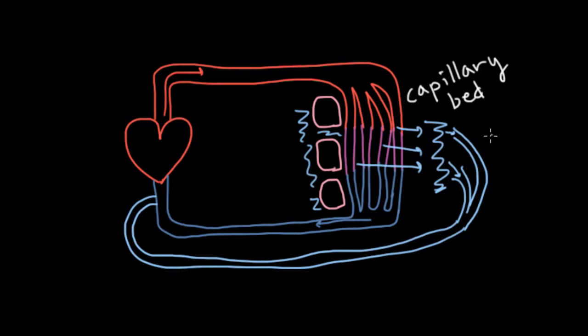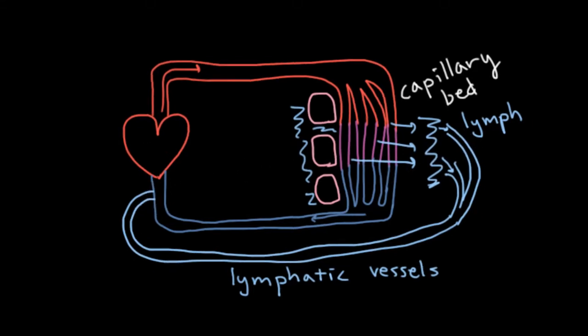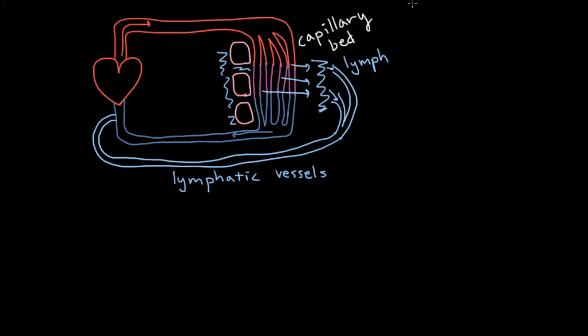So these vessels here we call lymphatic vessels. And if you'll notice, they're a little bit different from blood vessels because they don't form a closed loop. The lymph, as this stuff is called, lymph, so that's the fluid that gets forced out of your blood. The lymph goes in here, and it gets dumped out into the blood vessels there. It doesn't go back around to the start. So that's kind of the basic explanation for why we need these lymphatic vessels.